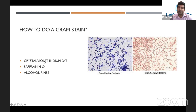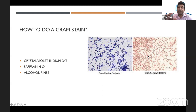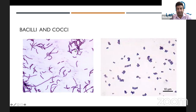You take the specimen and soak it in crystal violet iodine dye, then wash it in an alcohol rinse. The gram-positive bacteria will retain the dye, but gram-negative do not. You then counter-stain the bacteria in safranin O, and these will stain pink under the microscope. So gram-positives will look purplish or violet, and gram-negatives will look pink. We then further subdivide bacteria on whether they look rod-shaped — called bacilli — or whether they look like clusters of grapes — called cocci.